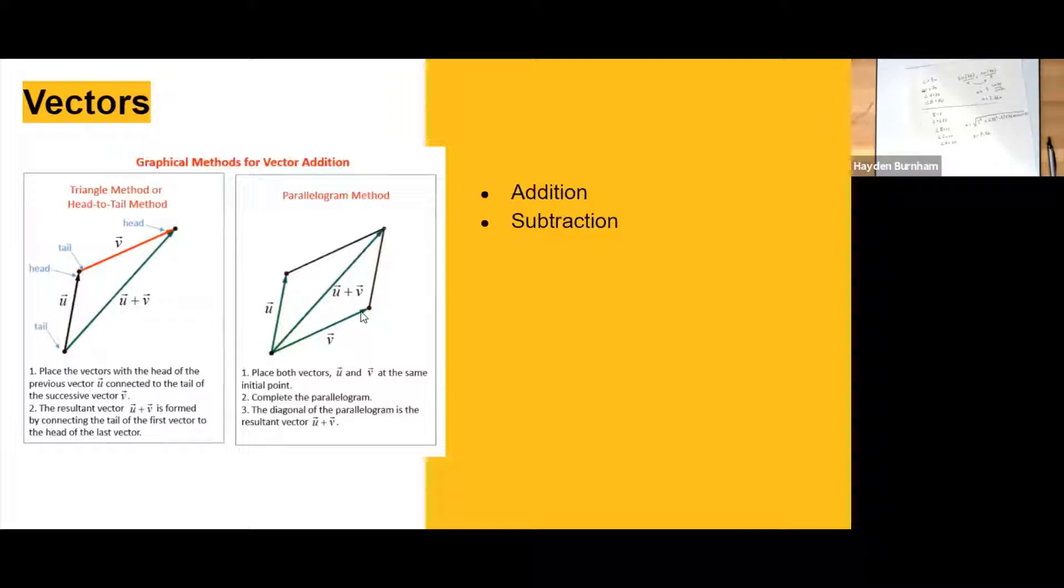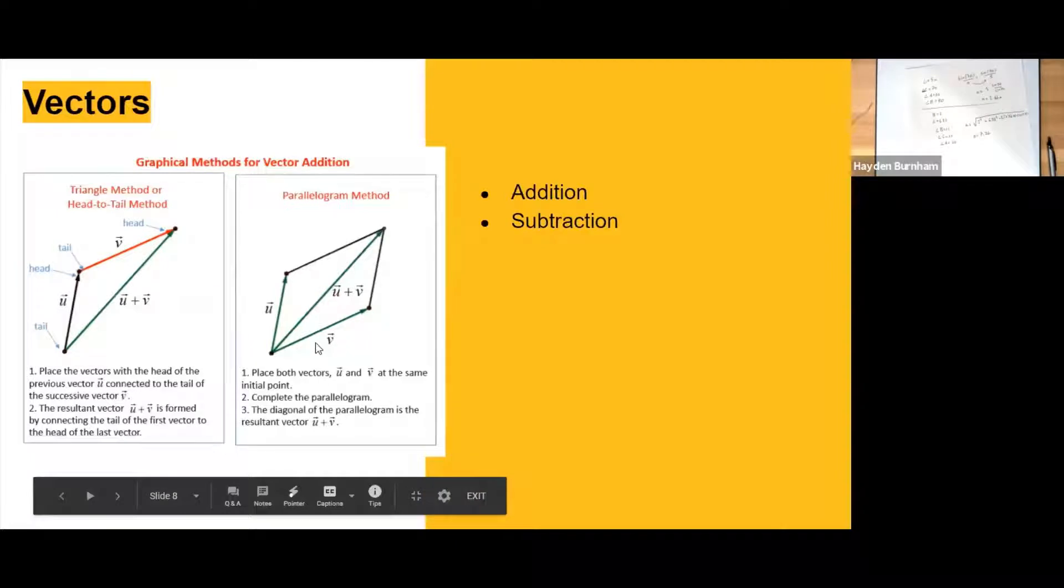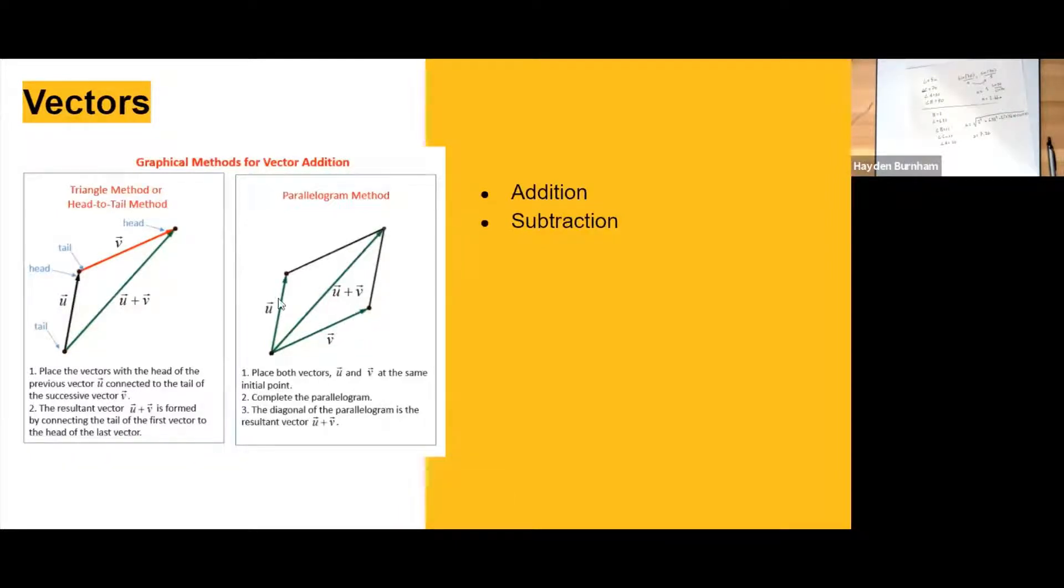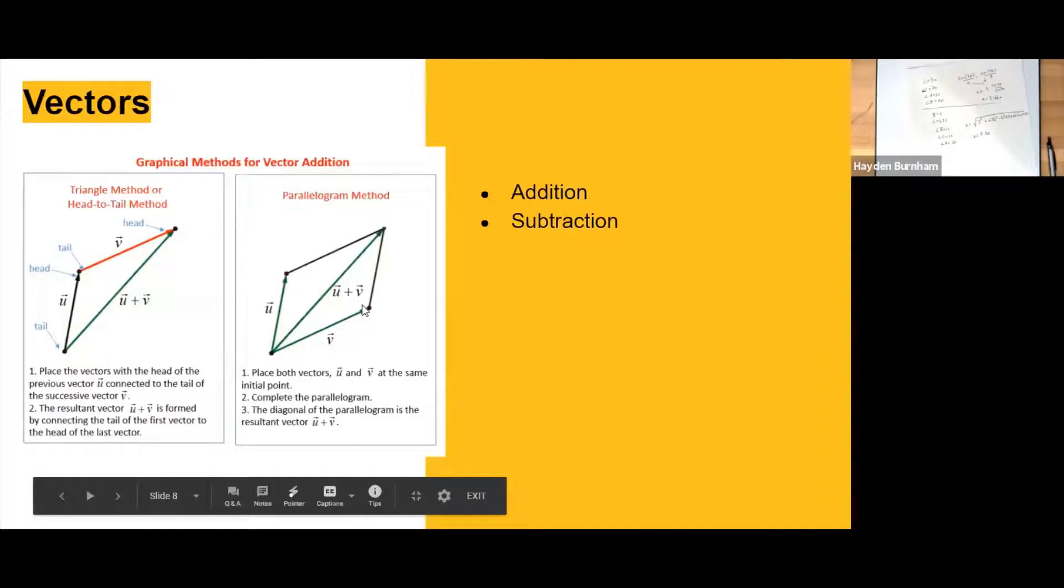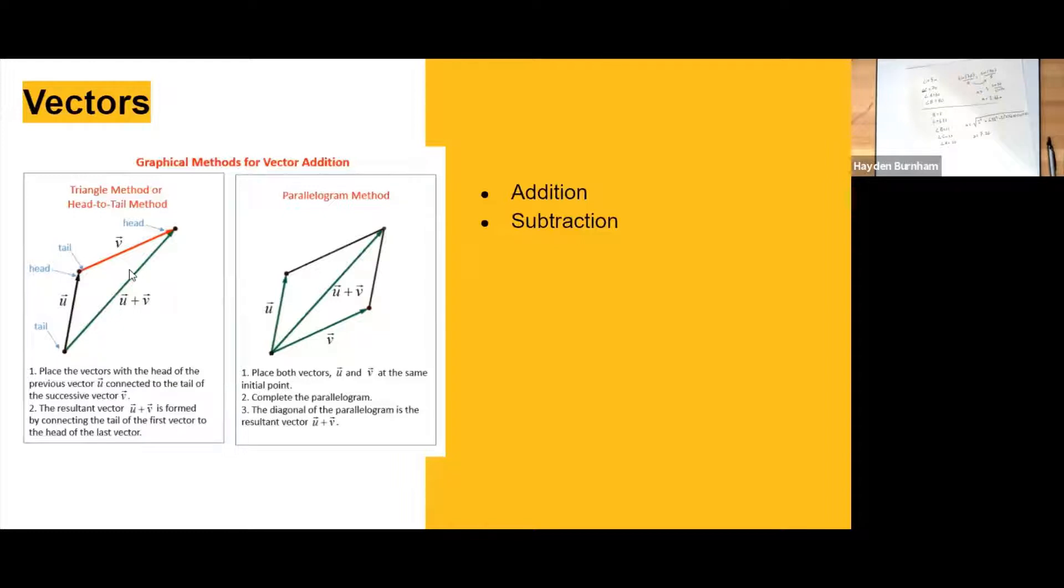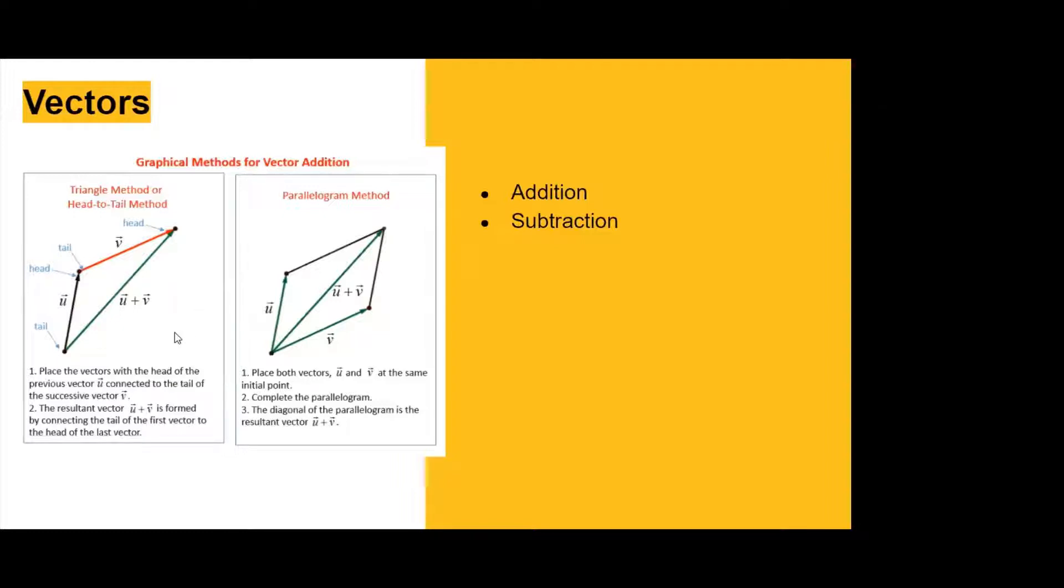And then the other method, which I don't really prefer because it's a little bit more complicated, is called the parallelogram method. Basically, you just take the two vectors and you make a parallelogram out of them, and then you draw from the two corners of that parallelogram. But that method is, I don't know, I feel like it takes more steps. I feel like the head-to-tail method is a lot easier to understand.